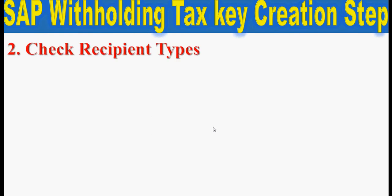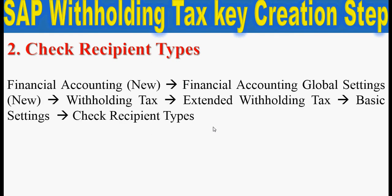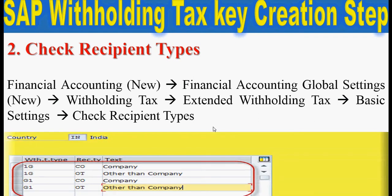The second step is to check recipient types. Go through this path: Financial Accounting New > Financial Accounting Global Settings New > Withholding Tax > Extended Withholding Tax > Basic Settings > Check Recipient Types. Click on new entries and maintain your recipient types here — for company and other than company.